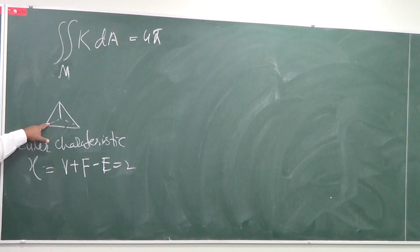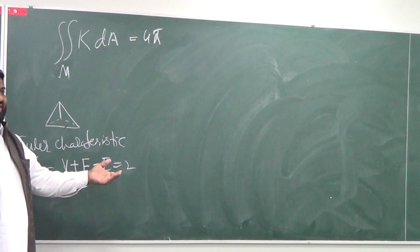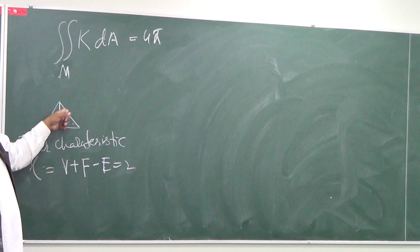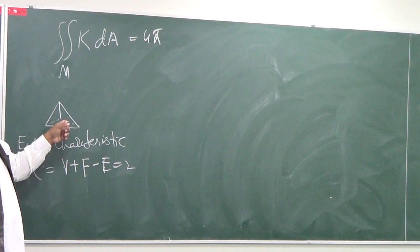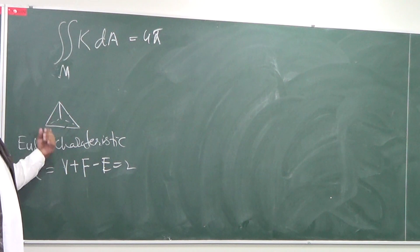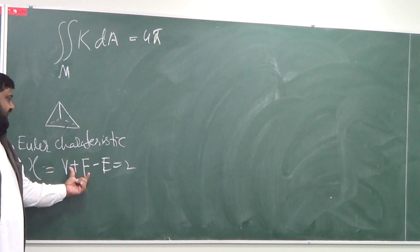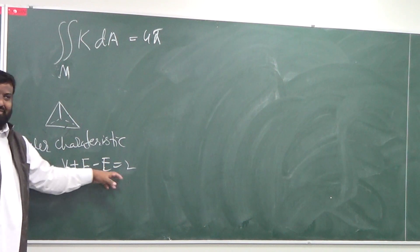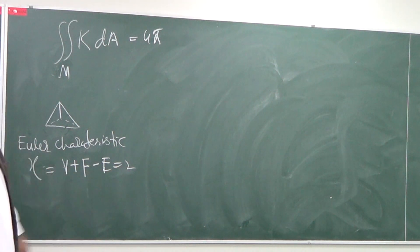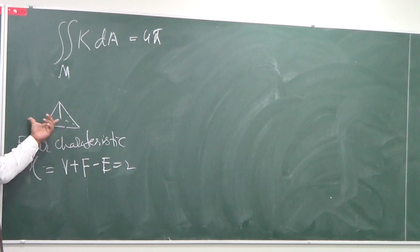Whether you take a pyramid, an icosahedron, or a dodecahedron — just count the number of vertices, count the number of faces, and sum and subtract what you call edges. Just verify this formula. Maybe it's V plus F minus E, or it could be V plus E minus F. I think it is something close to this, and this is not just for the pyramid.